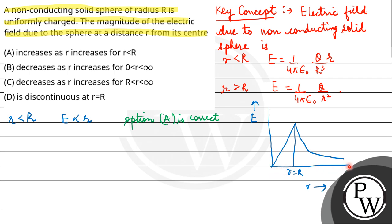Option C is the electric field decreases for r greater than R. So that means option C is also correct.